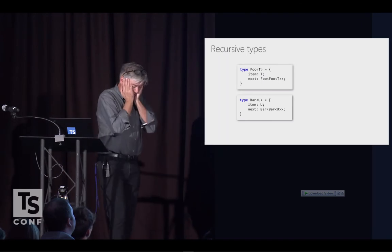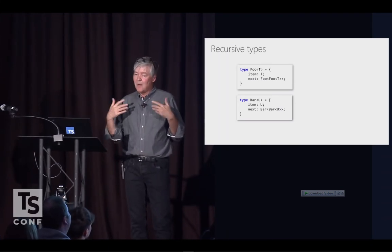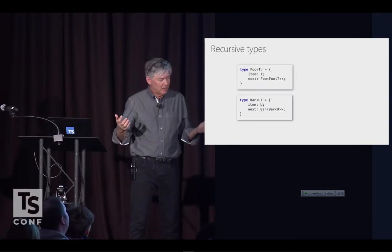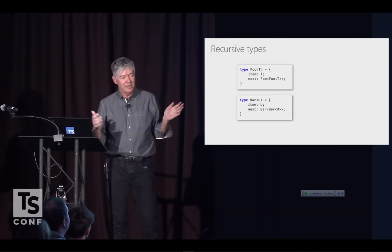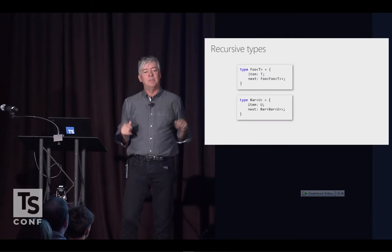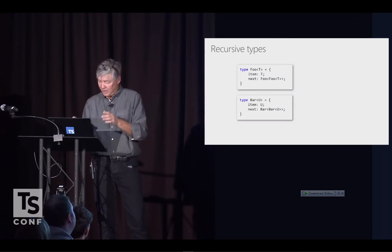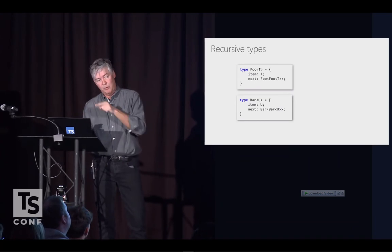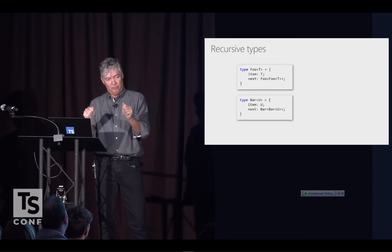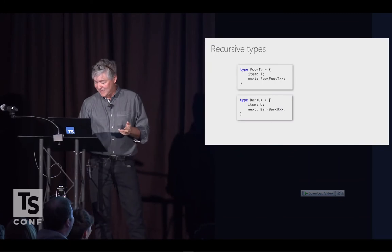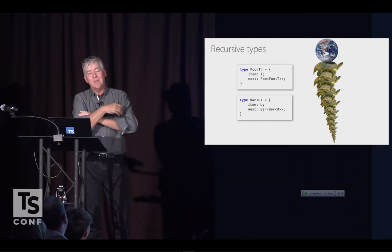Another thing we spend a lot of time on is the compiler writer's worst nightmare with structural types and generics. Once you combine those, you can create infinite types different in structure. When you compare two structural types — say a Foo and a Bar for some T and U that happen to be the same thing — you have to check if they're identical. They're objects, so you look at the item property. For Foo of string and Bar of string, they match. Then you look at the next property, which requires Foo of Foo of string and Bar of Bar of string — and off we go.